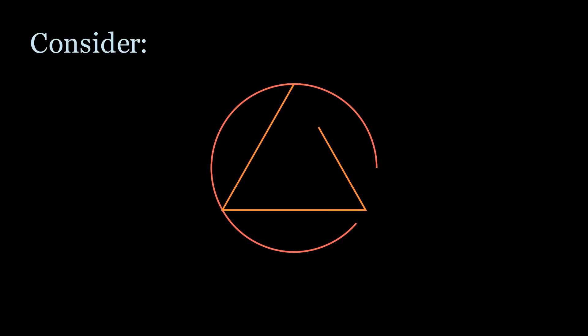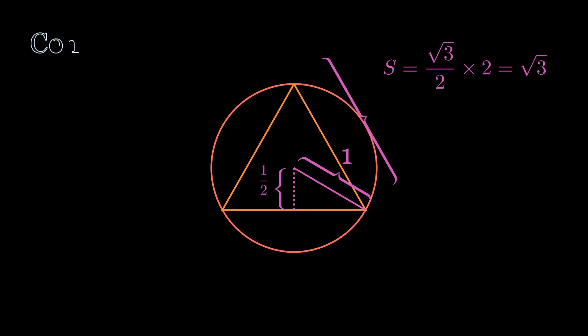Consider an equilateral triangle inscribed in a circle, with radius 1 for convenience. Then, evidently, the side length of that inscribed triangle should be 2 times the square root of 3 over 2, or simply the square root of 3.